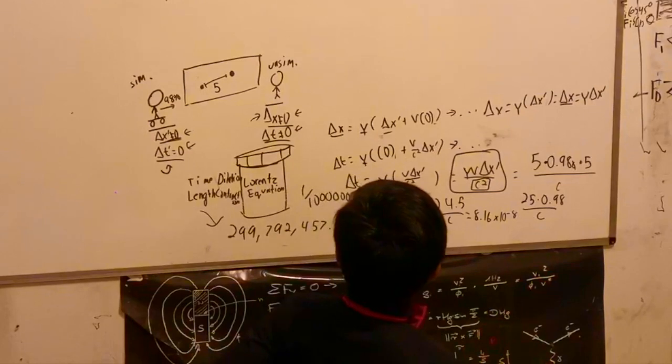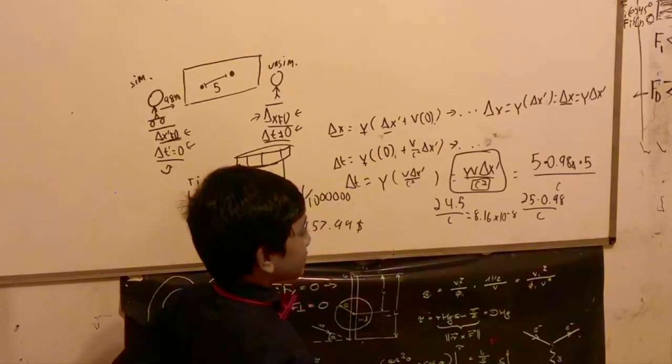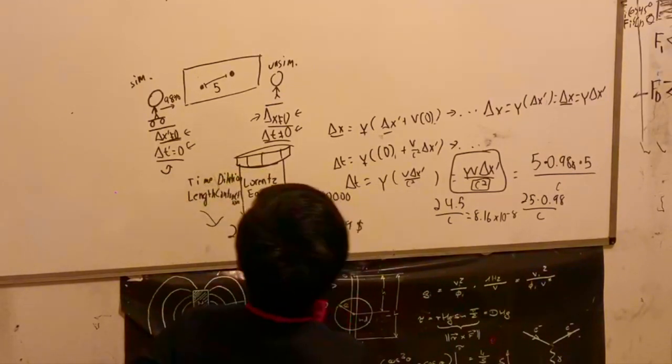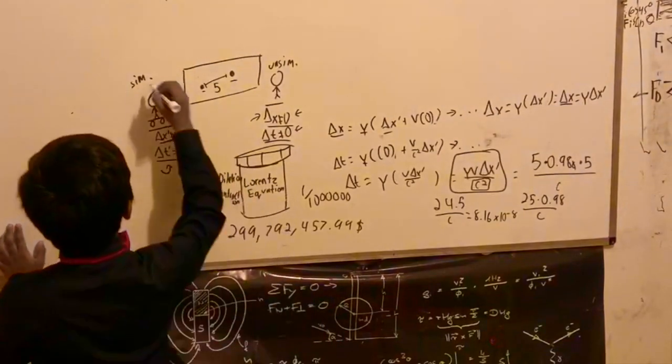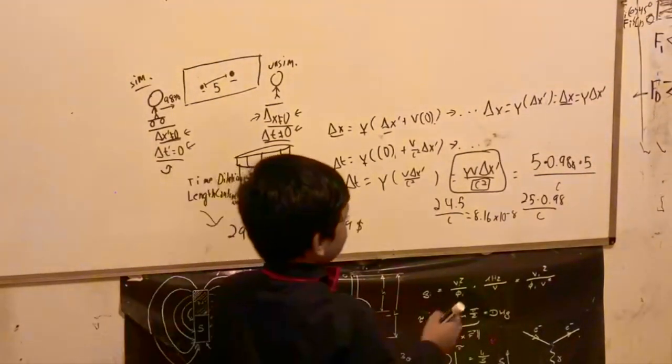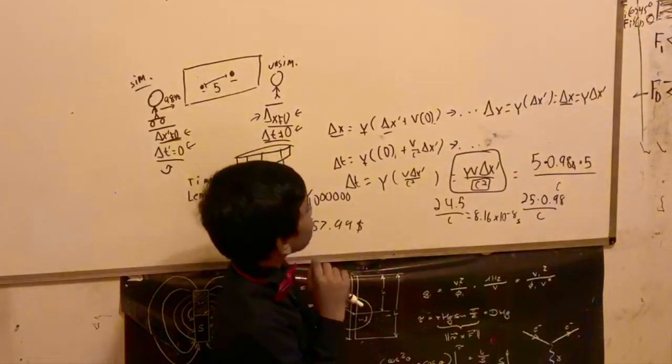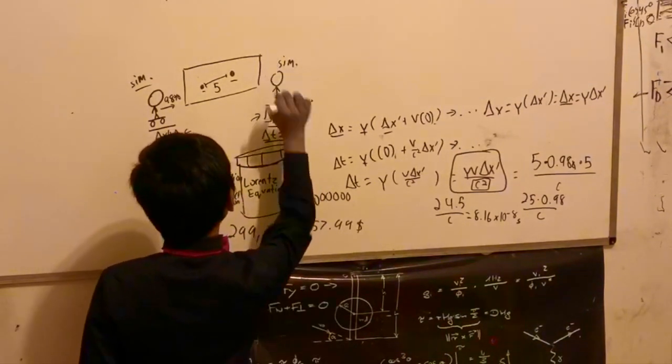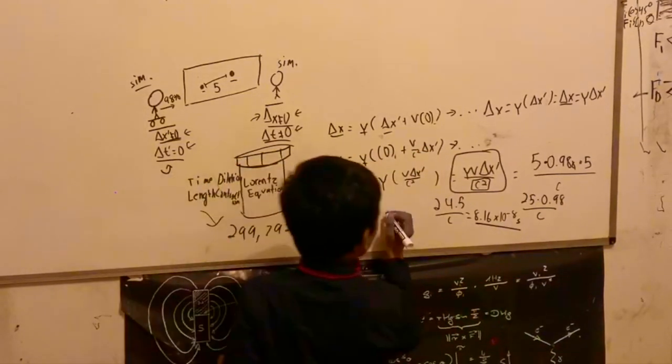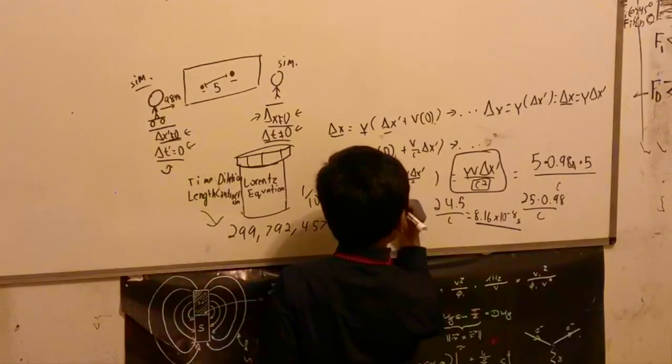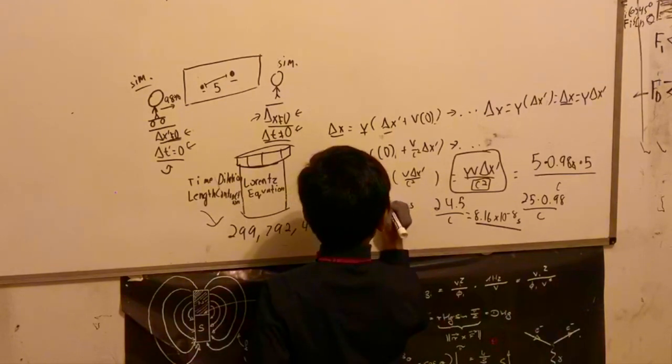That's the difference between the time for the observer at rest when for the observer moving it's simultaneous. That's probably going to be a pretty short interval. He probably would also say it's simultaneous considering he probably wouldn't notice 8.16 times 10 to the negative eighth seconds, or eight hundredths of a microsecond. He probably would not catch that, just saying.